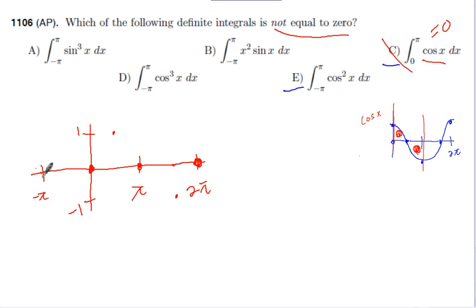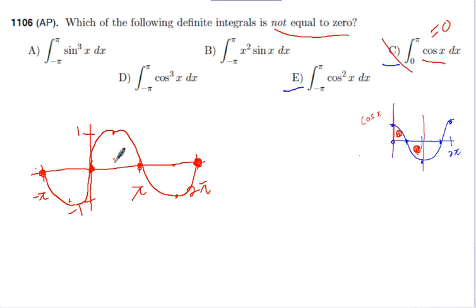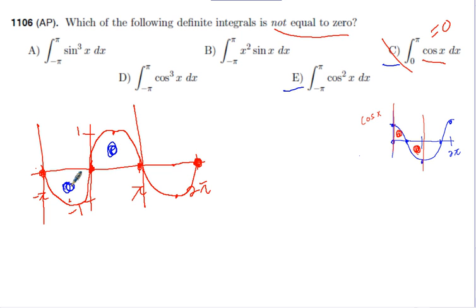So the same thing applies here. All this to the third power does is, instead of making it nice and curved like the cosine function, it's going to make it more square — more bulbous maybe. So if we're going from -π to π, the question is: does this area cancel out this area? And it does. So this is also going to equal 0, so it's not A.